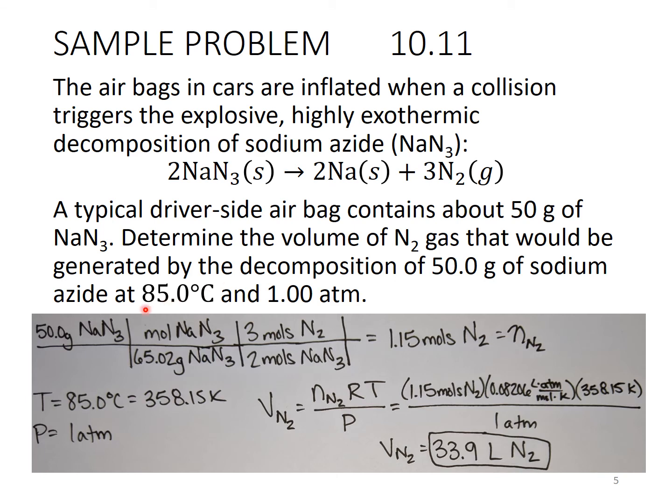So this is what this looks like. Like I had said, we have 50 grams, do the molar mass conversion, then do mole to mole ratio conversion. So we get 1.15 moles of nitrogen gas. So this was moles of N₂, which can be plugged in to get the volume of N₂. Again, we have Kelvin, we have atmospheres, plug that in. We get about 34 liters of nitrogen.